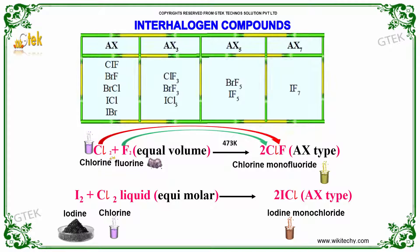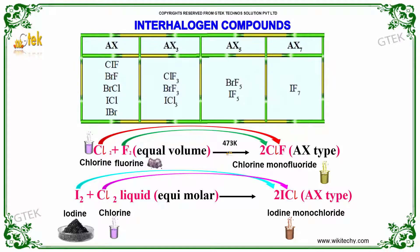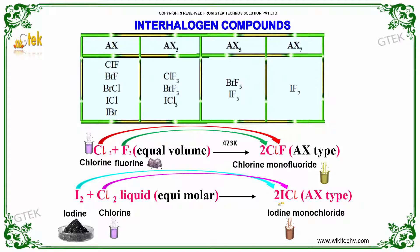Chlorine along with fluorine in equal volumes at 473 Kelvin gives chlorine monofluoride — it is of AX type. Iodine along with chlorine monofluoride is also of AX type.